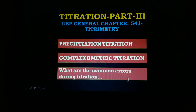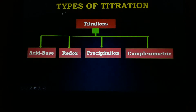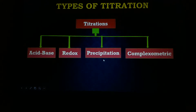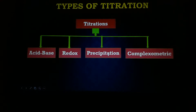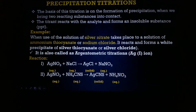We will also cover what are the common errors during titration that we have to take care of to get accurate results. The types of titrations we have discussed are: acid-base titration, redox titration, precipitation titration, and complexometric titration. Acid-base titration was discussed in part 1 and redox titration in part 2. Today we will cover precipitation and complexometric titration.